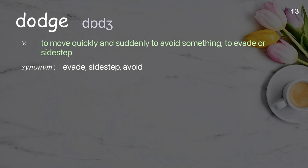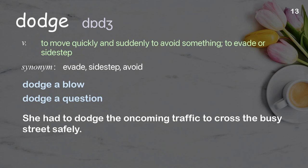Dodge: to move quickly and suddenly to avoid something; to evade or sidestep. Examples: dodge a blow; dodge a question. She had to dodge the oncoming traffic to cross the busy street safely.